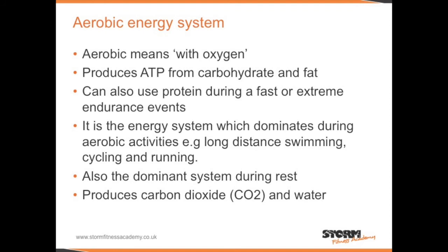The aerobic energy system. Aerobic means with oxygen. The aerobic energy system produces ATP from carbohydrate and fat. It can also use protein during a fast or extreme endurance events. It is the energy system which dominates during aerobic activities such as long distance swimming, cycling, and running, and is also the dominant system during rest. When it is utilised, it produces carbon dioxide and water as byproducts.